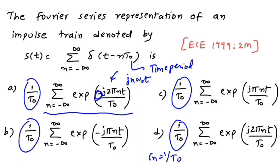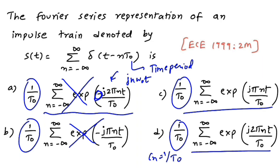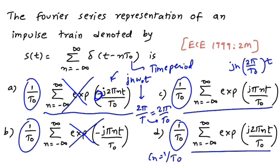Options with a negative power in the exponential are wrong — that sign belongs to the analysis equation. So options A and B are eliminated. Options C and D have a positive power, which is correct. Now we need ω₀ = 2π/T = 2π/T₀. Substituting, we need 2π/T₀ in the numerator, which matches option D. Therefore option D is correct.